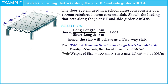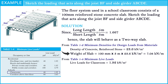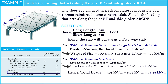After computing the dead load, we have to compute the live loads acting on the slab. Looking at table 1.4, minimum live loads, the live load for a classroom is equal to 1.92 kN per square meter. So the live load of the three-meter slab is equal to 5.76 kN per meter. Hence, the total load is 12.84 kN per meter.